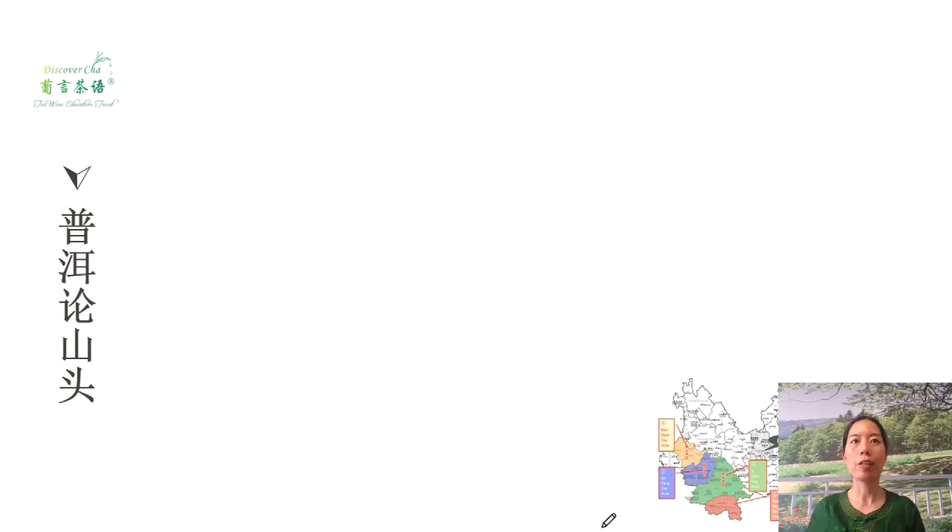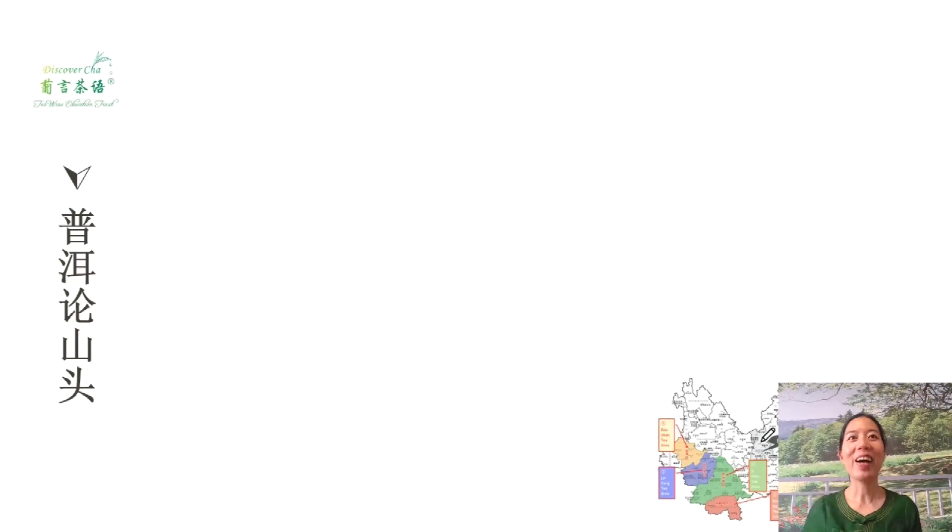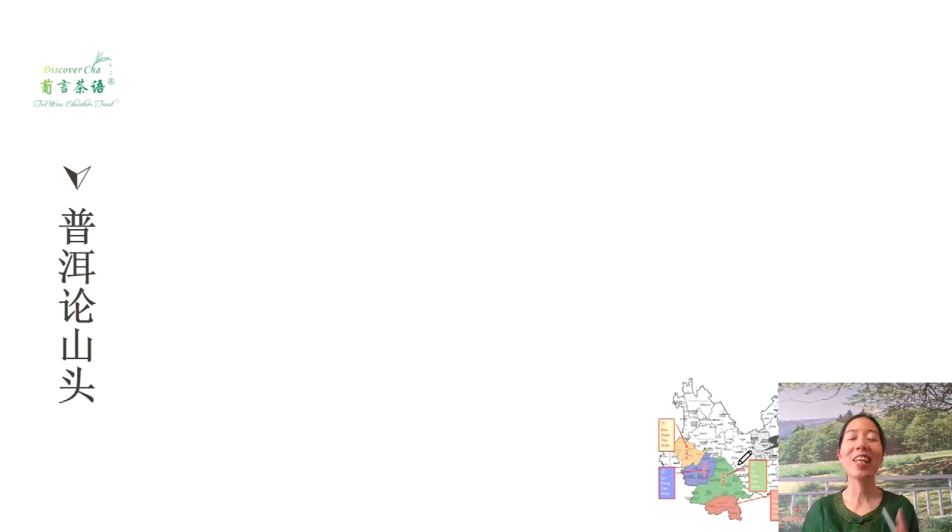In Yunnan, most of the tea regions are minority areas in the southwest. Here is a map of Yunnan — Kunming is where we are now. The four Puerh regions are Baoshan, Lincang, Pu'er city, and Xishuangbanna. As I introduced in the last lesson, Pu'er is both the name of this special tea and the name of the city.